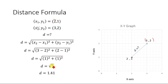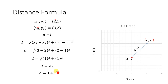We get d equals the square root of 1 squared plus 1 squared, which equals the square root of 2. Finally, the distance between these two points is 1.41. This is the application of the distance formula — we can determine the distance between any two points in a 2D plane.